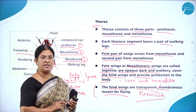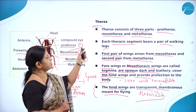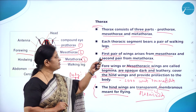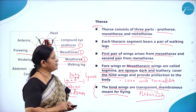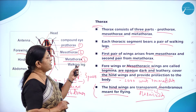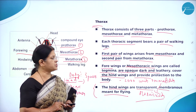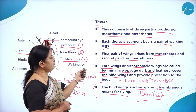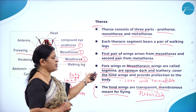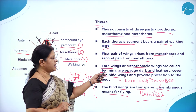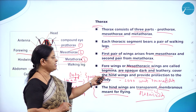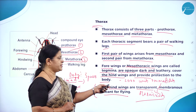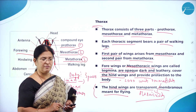The thorax consists of three parts — prothorax, mesothorax, and metathorax. Each thoracic segment bears a pair of walking legs. The first pair of wings arises from the mesothorax and the second pair from the metathorax. The four mesothoracic wings called tegmina are opaque, dark, and leathery, covering the hind wings and providing protection. The hind wings are transparent and membranous, meant for flying.